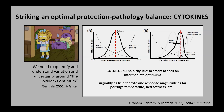But in this case, a host teeters on the edge of catastrophic overshooting, such as seen in septic shock. These are important principles to bear in mind when thinking about how natural selection could have led to the power and peril of immune systems that we observe today.